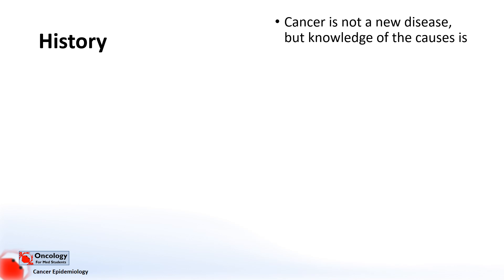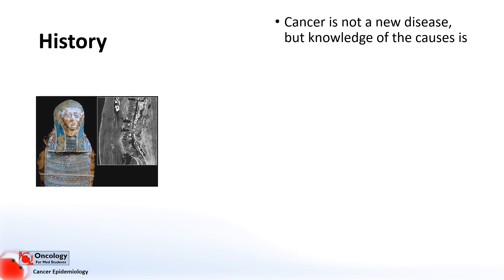When looking at where we currently are in terms of cancer epidemiology research, it's useful to know where we've come from. Although cancer is not a new disease, real knowledge of its causes really isn't. The presence and recognition of cancer as a disease goes back a long time. As we can see in this picture here on the left, evidence of metastatic prostate cancers have even been found in ancient Egyptian mummies, this one dating back to around 2,200 years ago.